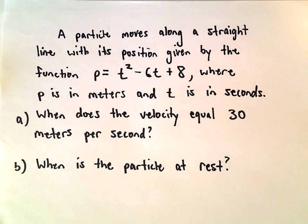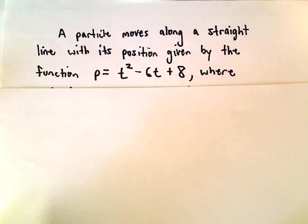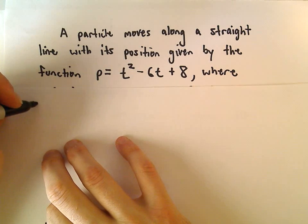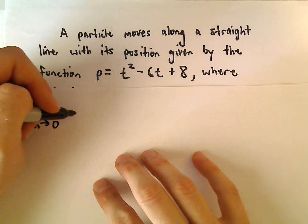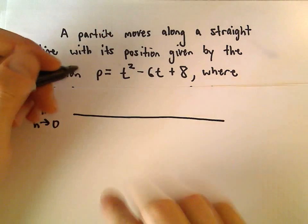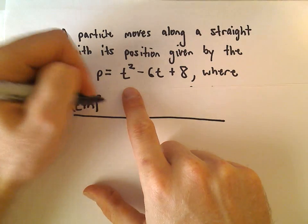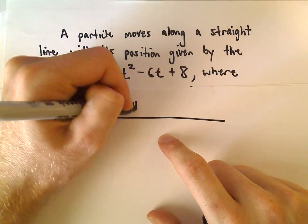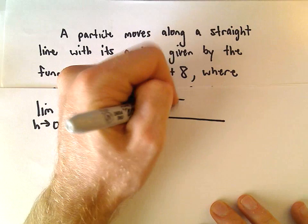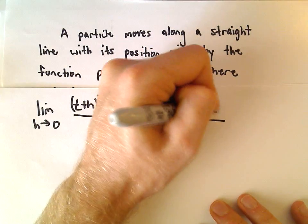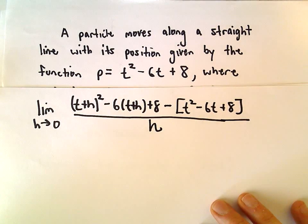Well, since we're given position, to find information about the velocity, we have to find the derivative. So we'll use our definition. We've got the limit as h approaches 0, and what we'll have to do is everywhere there's a t, we'll replace that with t plus h. So we'll have t plus h squared minus 6 times t plus h plus 8, and then we have to subtract away the original function, so t squared minus 6t plus 8, and then all of that will be divided by h.